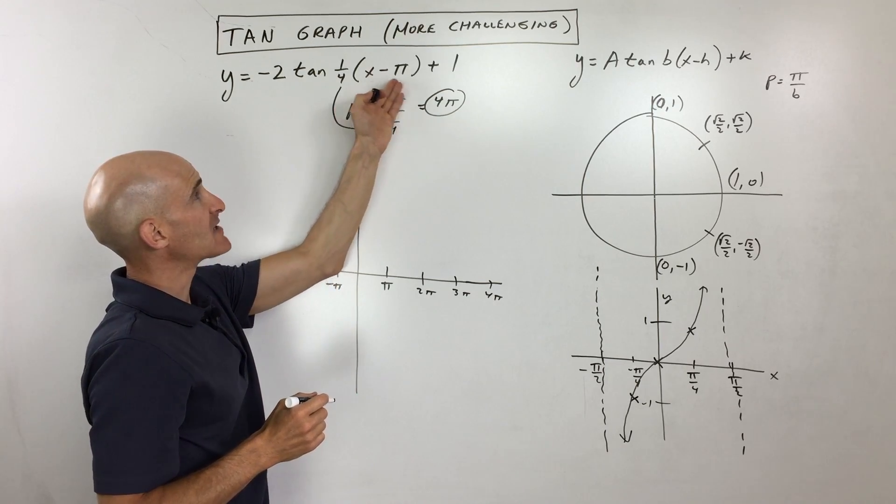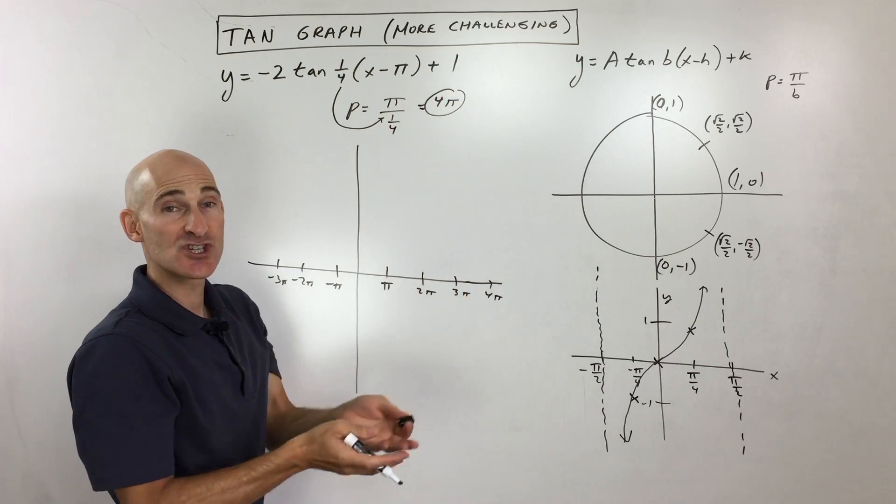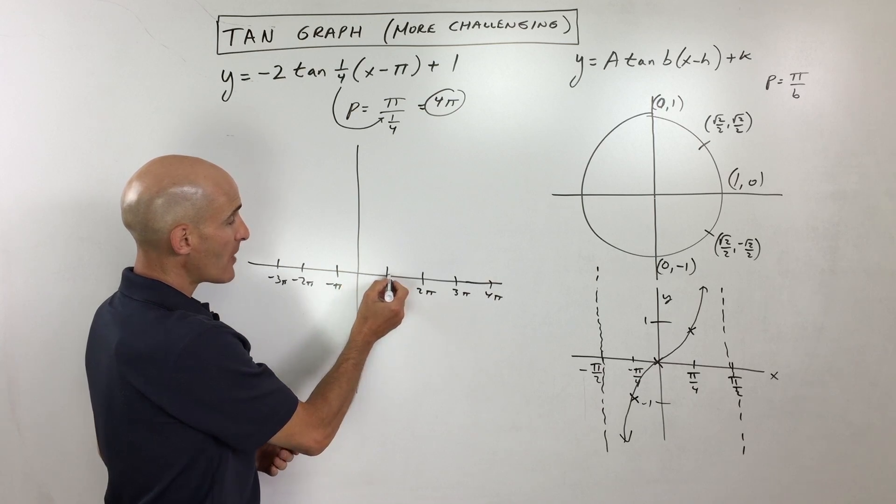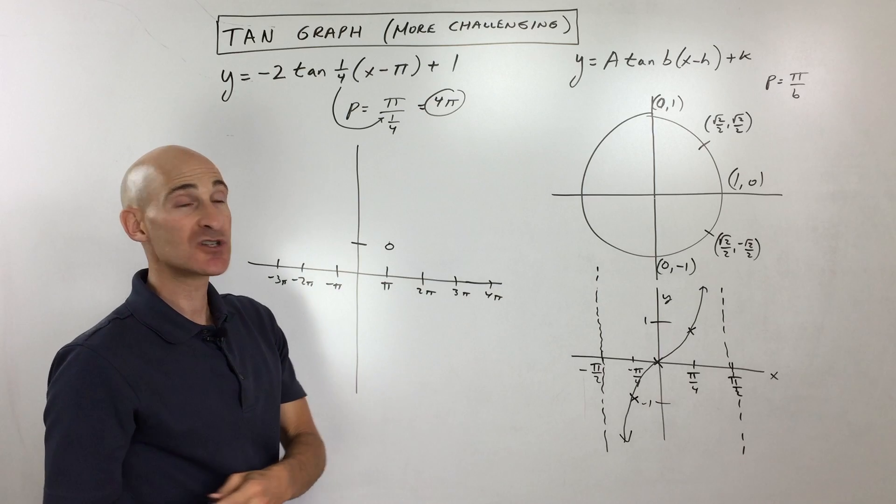Now notice the x minus pi. This is actually going to shift the graph right pi. The plus 1 is going to shift it up 1. So what I'm going to do from the origin, I'm going to shift right pi up 1. I'm going to think of this as my new origin or my new starting point.